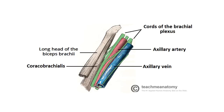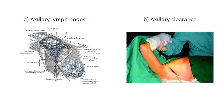The axilla is the main pathway by which structures enter and leave the upper limb. The axillary artery, axillary vein, brachial plexus, and axillary lymph vessels all pass through the axilla. The tendons of the long head of the biceps brachii and the coracobrachialis also pass through the axilla, attaching to the humerus.